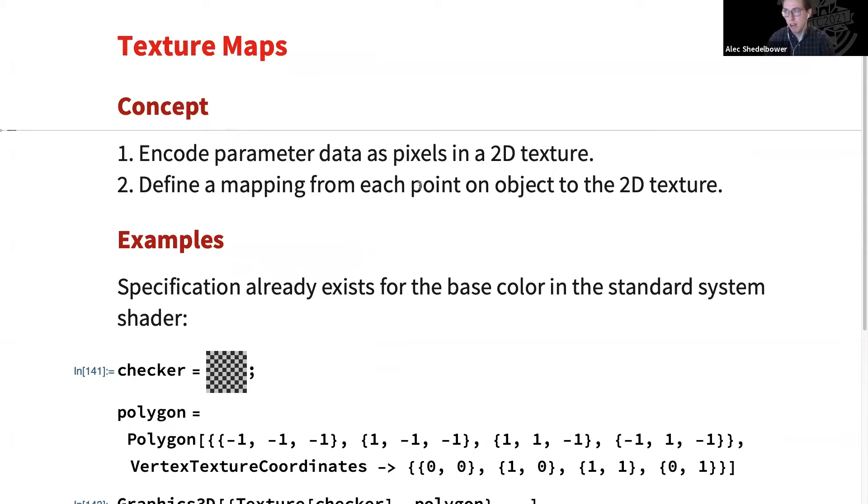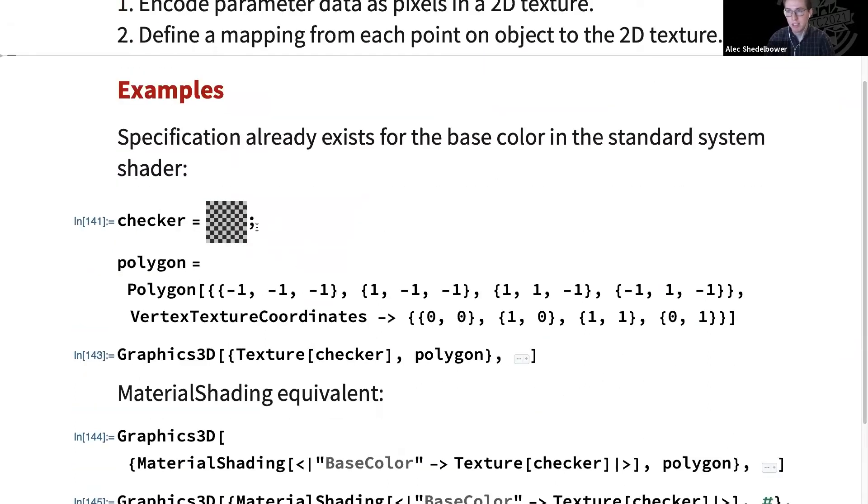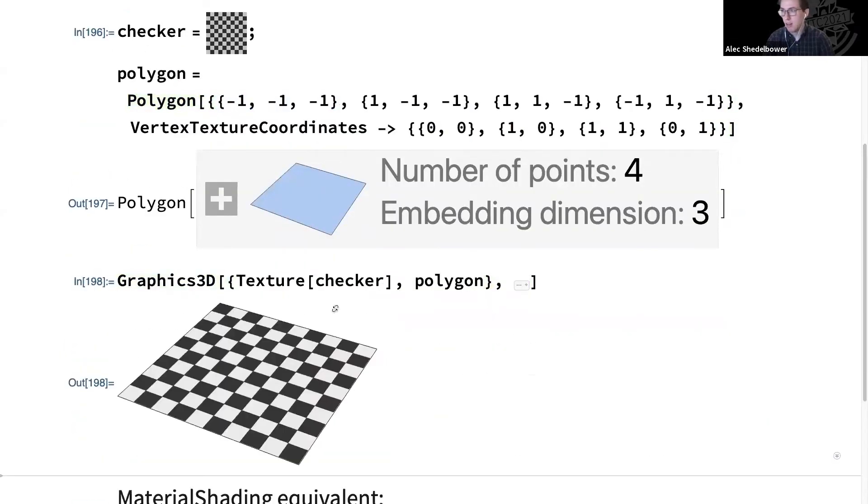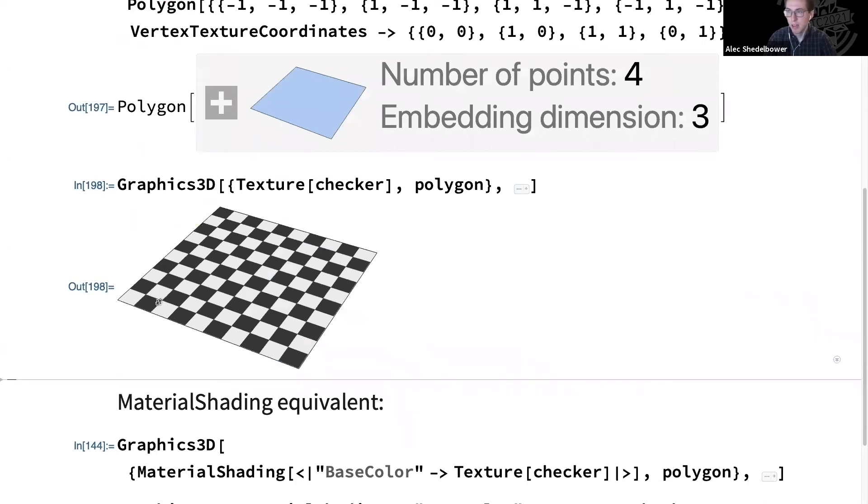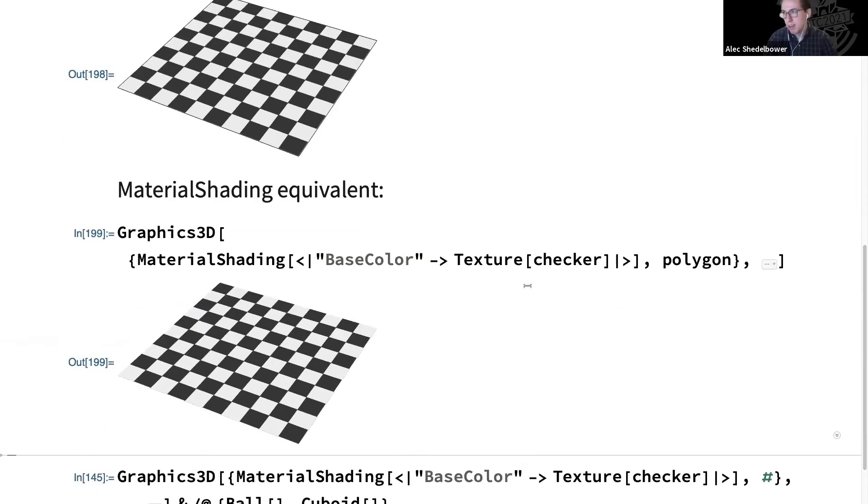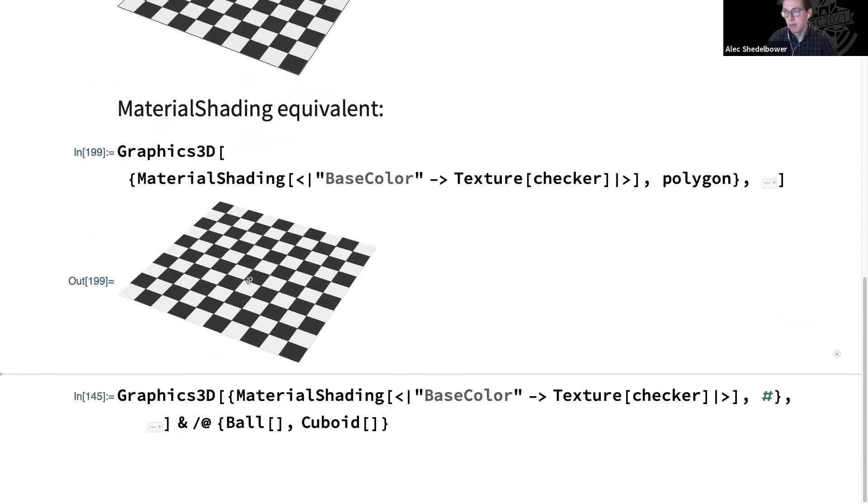So the idea here is that we can encode that parameter data as pixels in a 2D texture. And then we can define a mapping from each point on our object to that 2D texture. So we already have this working with the built-in system shader for the base color. For example, we can take a nice checker texture and a polygon. This polygon has these vertex texture coordinates that correspond to its vertices. For example, we'll map this vertex here to the bottom left corner of our image. We can do that for all the vertices and run it. And we see our nice checkerboard kind of map to our polygon. We can do the equivalent thing with MaterialShading now by setting that base color parameter directly to that texture. So here it's the same named parameter and you can just pass a texture instead of a color.